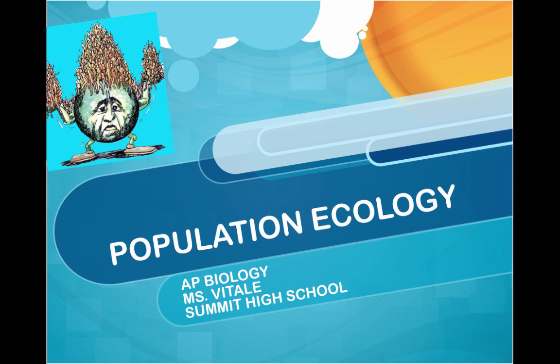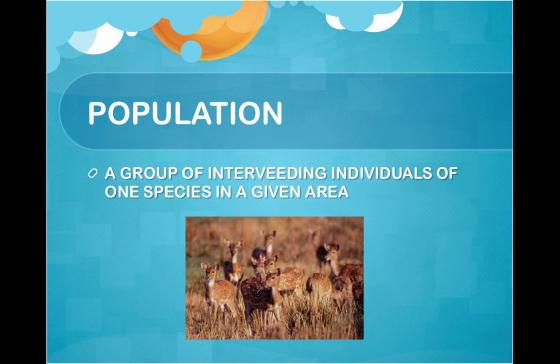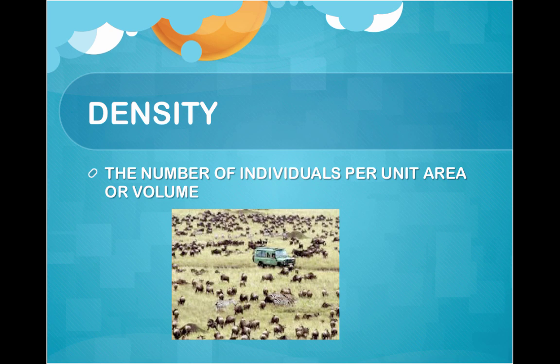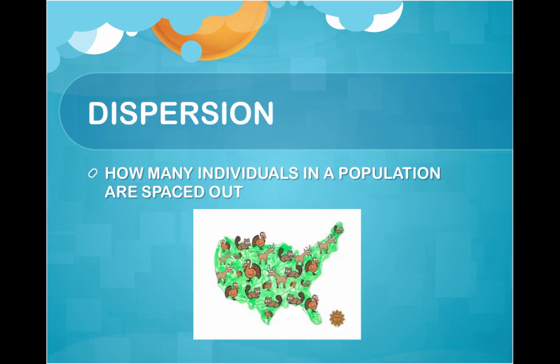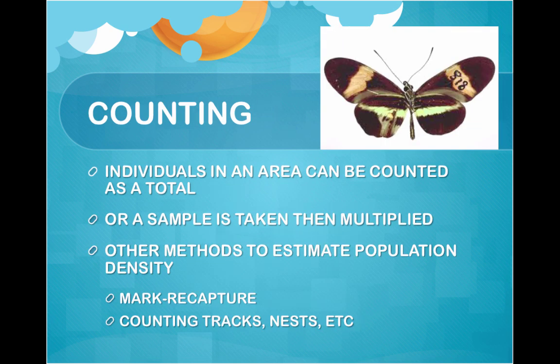Population is a group of interbreeding individuals of one species in a given area. Density is the number of individuals per unit area or volume. Dispersion is how individuals in a population are spaced out. Individuals in an area can be counted as a total. If that's not possible, a sample is taken, then multiplied.